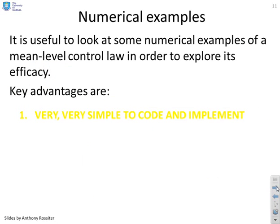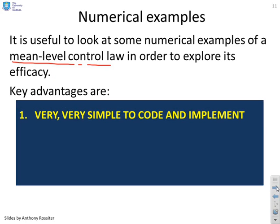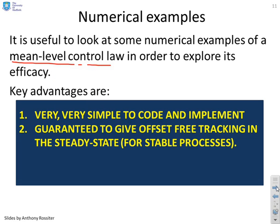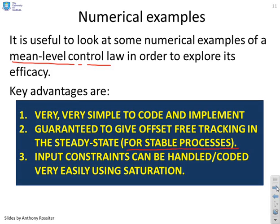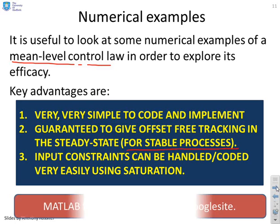So some numerical examples. We want to look at some examples and see, is this mean level control actually effective? Key advantages are, it's obviously very simple to code and implement. We'll demonstrate that in a moment. It's guaranteed to give offset-free tracking in the steady state, clearly for stable processes. And input constraints can be handled and coded very easily using saturation.